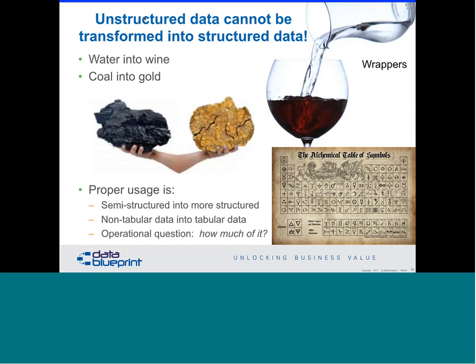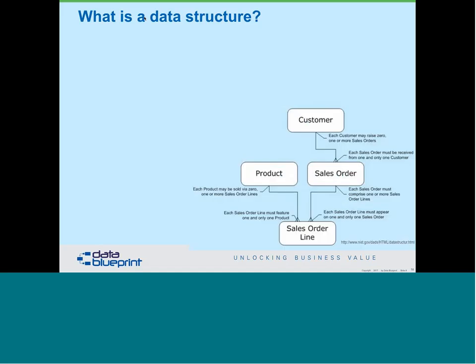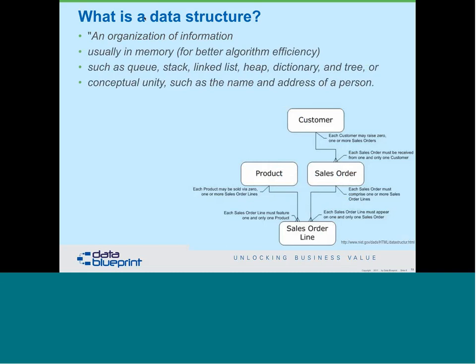The real operational question is how much do you need to have transformed? A data structure, as defined by NIST — the National Institute of Standards and Technologies — is an organization of information, usually in memory. Note that you may have your data stored on disk differently than it's organized inside the computer. For better efficiency, data structures are commonly named as queues, stacks, linked lists, heaps, dictionaries, and trees. Those with a computer science background will be familiar with these.